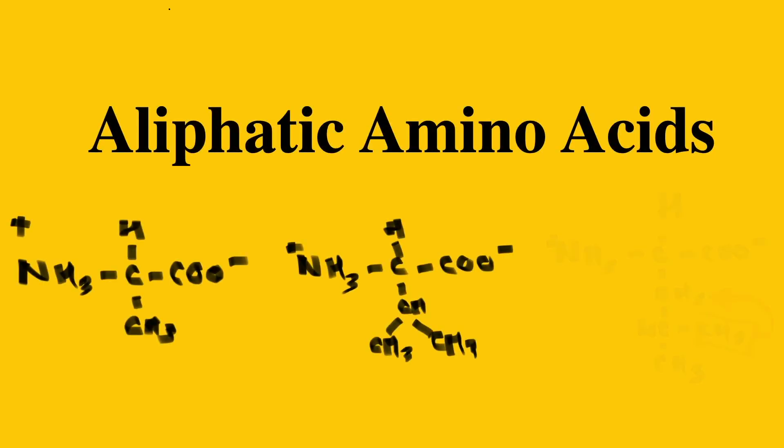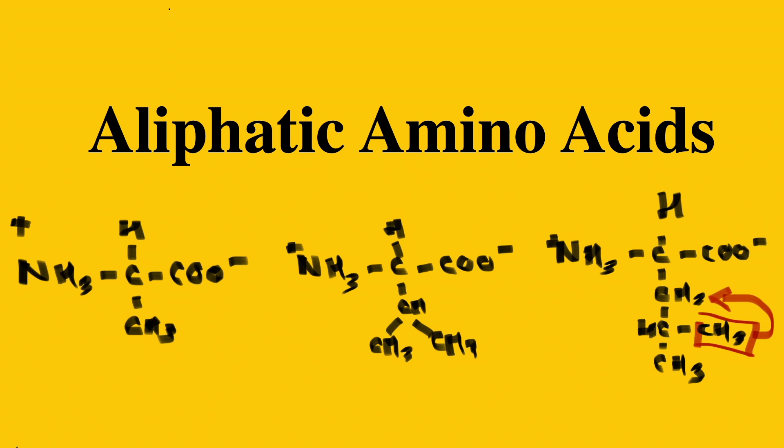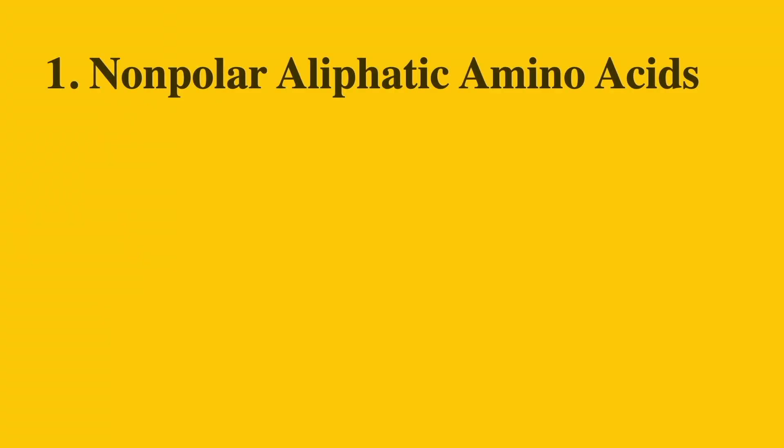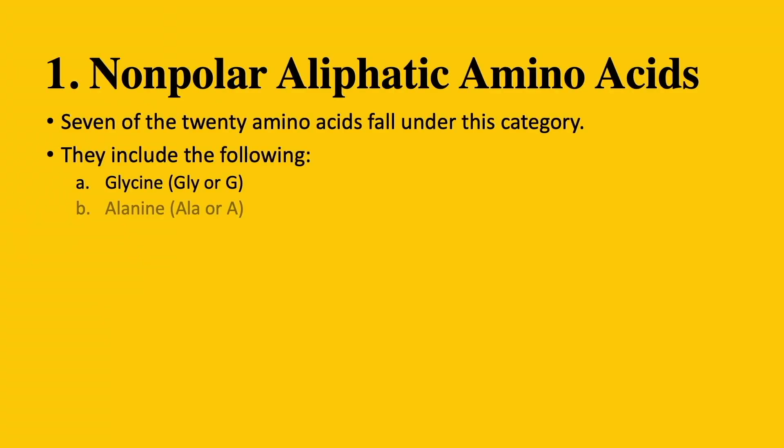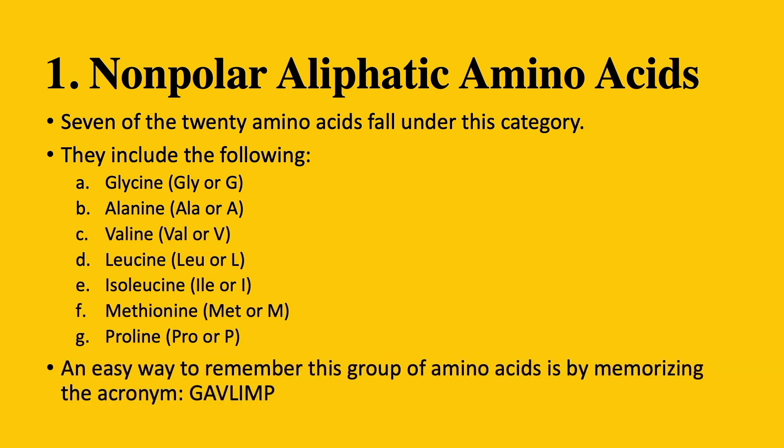Hi everyone, welcome back. Today's video will be about aliphatic amino acids. Group number one: non-polar aliphatic amino acids. Seven of the twenty amino acids fall under this category.